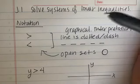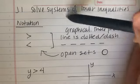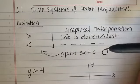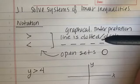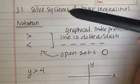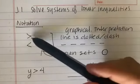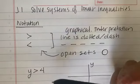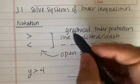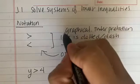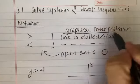We're going to look at J1 solved systems of linear inequalities. The notation we're looking at is going to be greater than or less than, and this has a graphical interpretation.